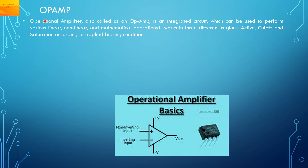OPAMP stands for Operational Amplifier — OP stands for Operational and AMP stands for Amplifier. It is an integrated circuit used to perform various linear, non-linear, and mathematical operations.